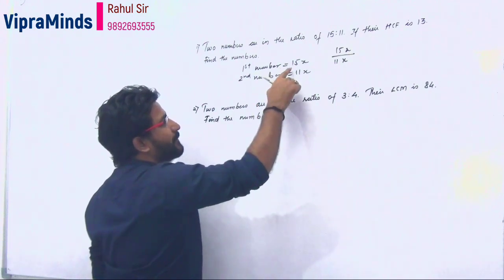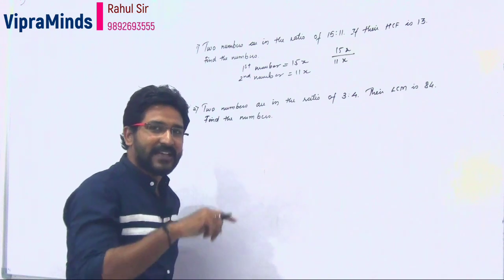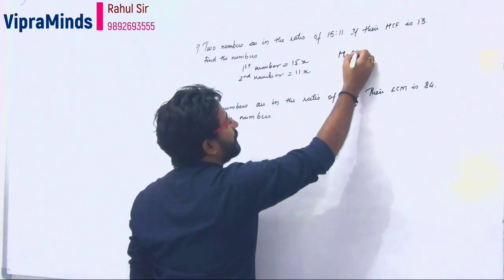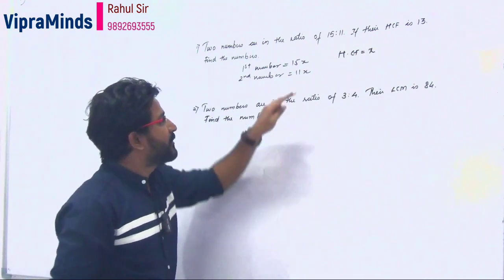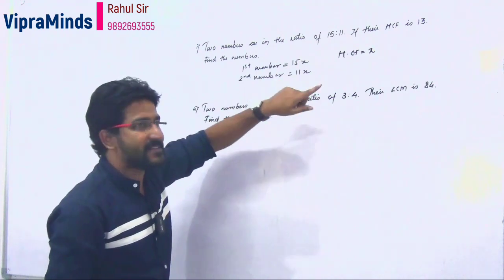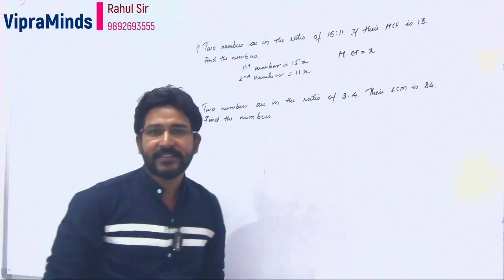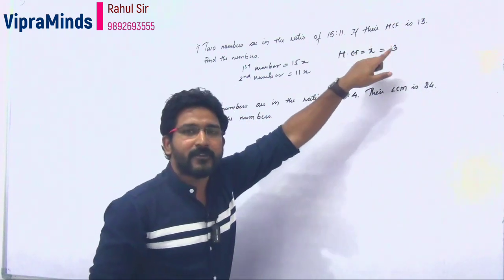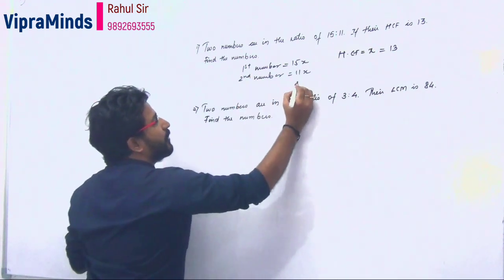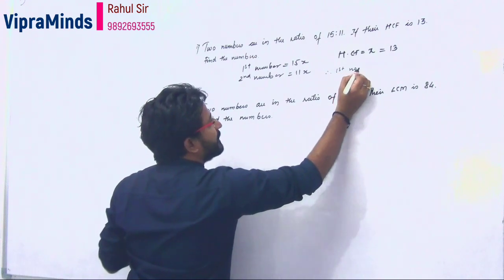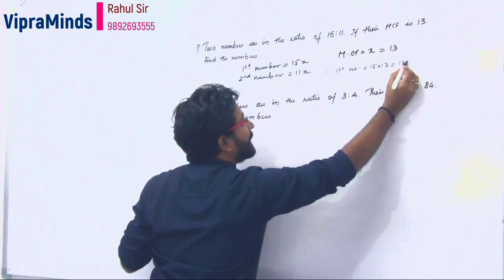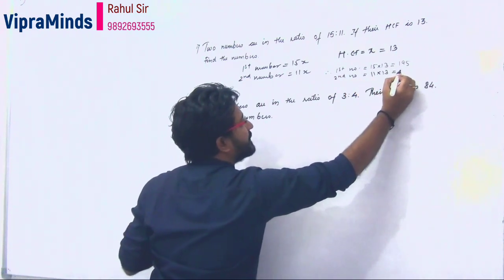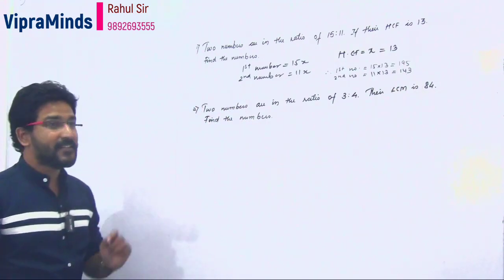If we have 15x and 11x, what is the HCF? The HCF will be x, because x is the highest common factor that was cancelled. Therefore HCF equals x. We know that HCF is 13, so x equals 13. The first number is 15 into 13, which is 195. The second number is 11 into 13, which is 143. These are the two numbers.